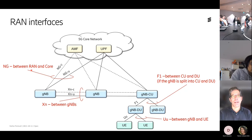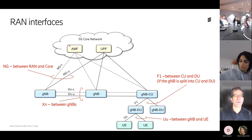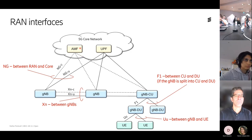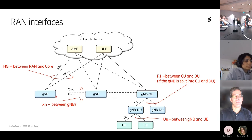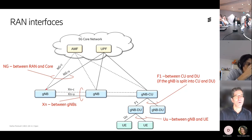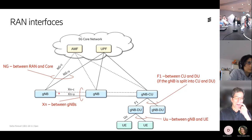The architecture has the 5G core with an Access and Mobility Function and User Plane Function. The gNB — gNodeB, or base station — connects to the core via the NG-U interface for user plane and NG-C for control plane. Different gNBs connect to each other via the Xn interface, used for example during handovers.